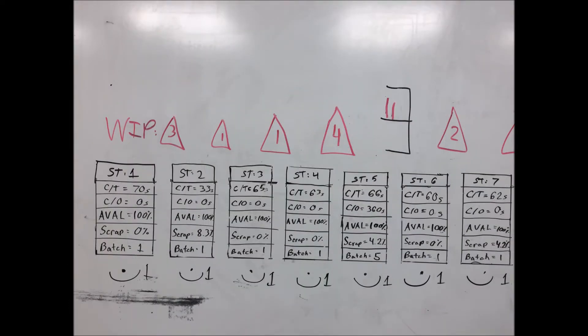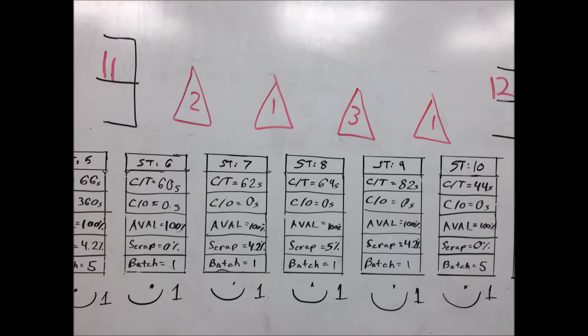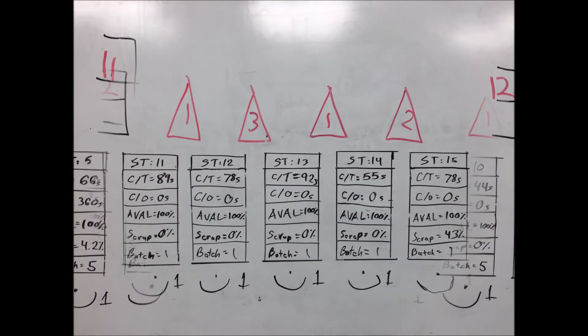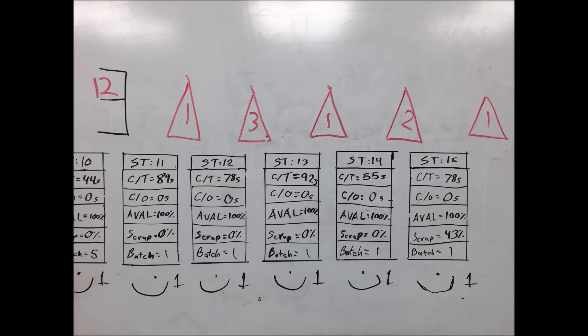Step 3: WIP. Draw triangles, supermarkets, or other inventory shapes between each of the process boxes to represent WIP. Count the WIP between each process and record them in the triangles or shape. For our example, we included the WIP in each station in the WIP triangle.